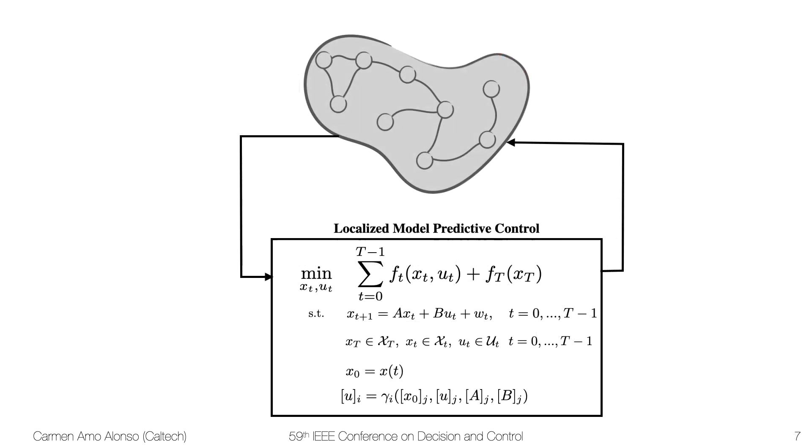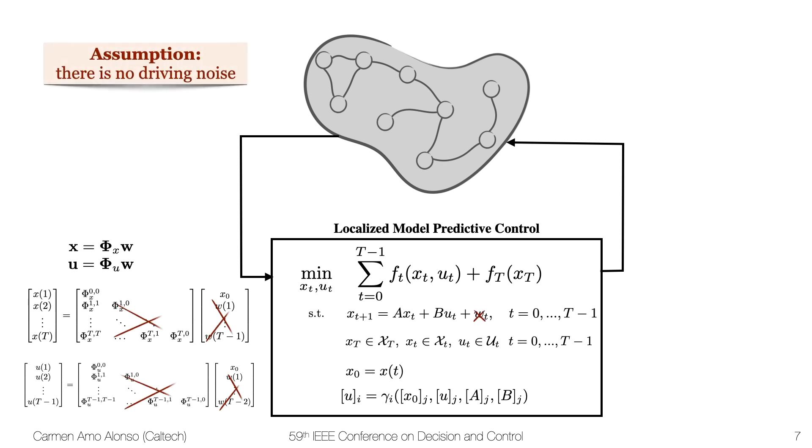We can now go back to our problem statement and perform a change of variables. We're going to introduce the assumption that there is no driving noise, and this is going to make our computations easier. But adding driving noise is not going to make things much more complicated, since we are already closed-loop. In what follows, we will only work with the first block column.